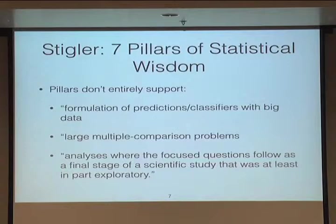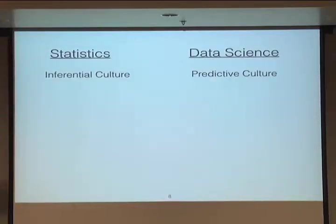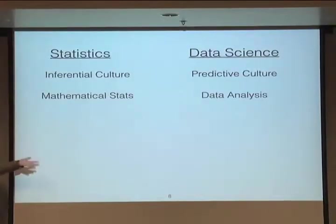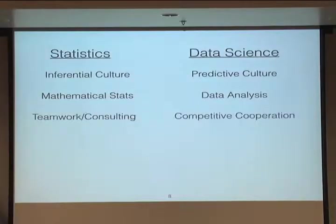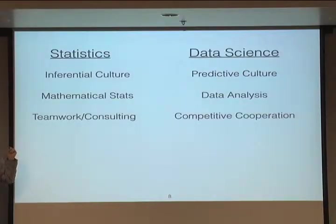With that as background, here's a quick overview of how I see the difference between statistics and data science. As Leo Breiman says, statistics leans toward inference; data science leans toward prediction. Statistics leans toward mathematics; data science toward data analysis. And there's a real cultural difference in the way these two fields work. The paradigm for statistics is that the statistician works as a collaborator or consultant — they call you, you solve the problem, and leave.